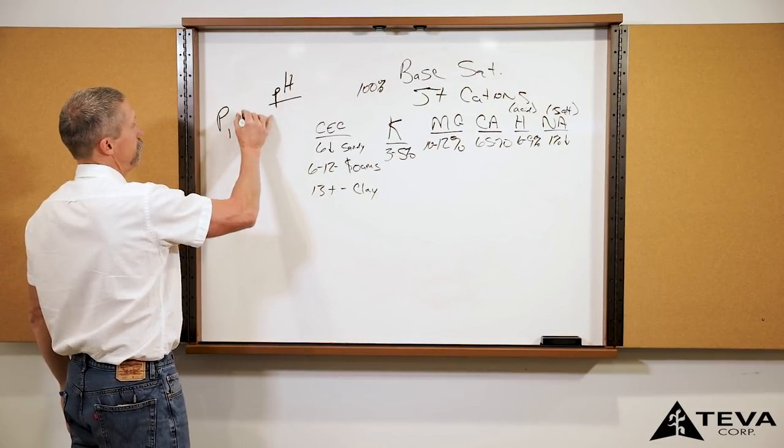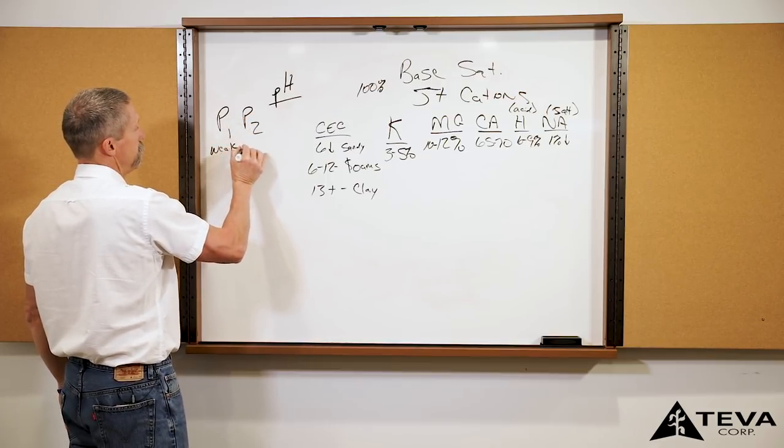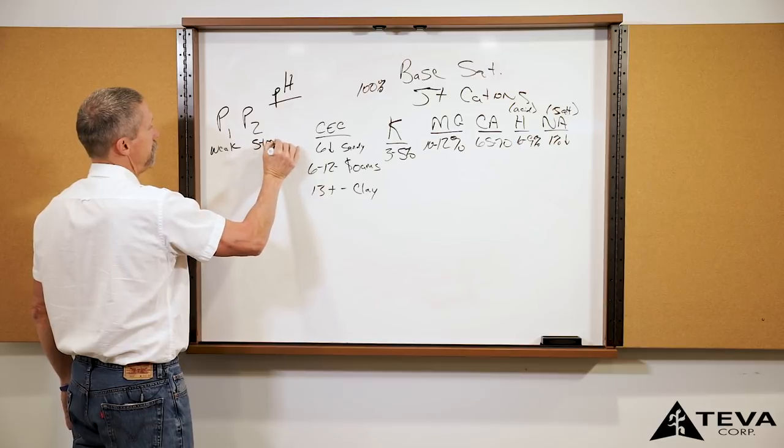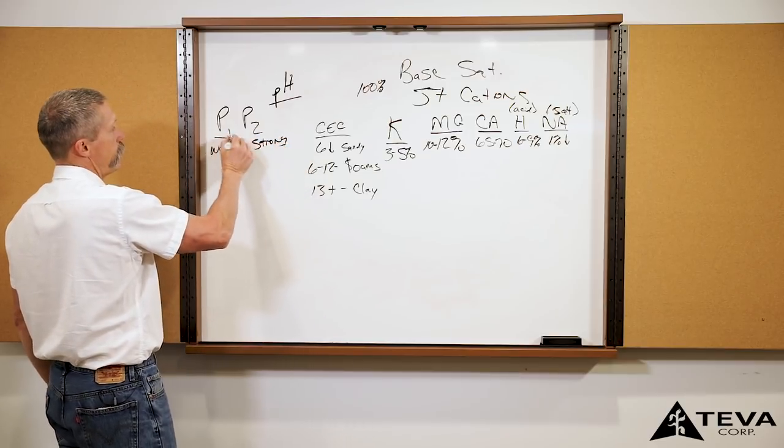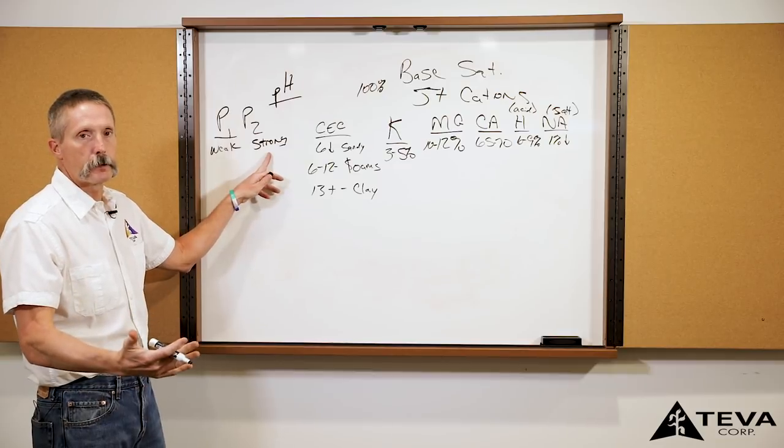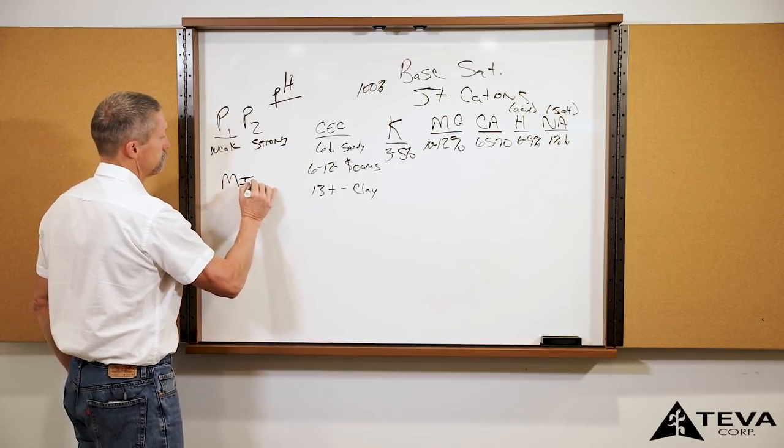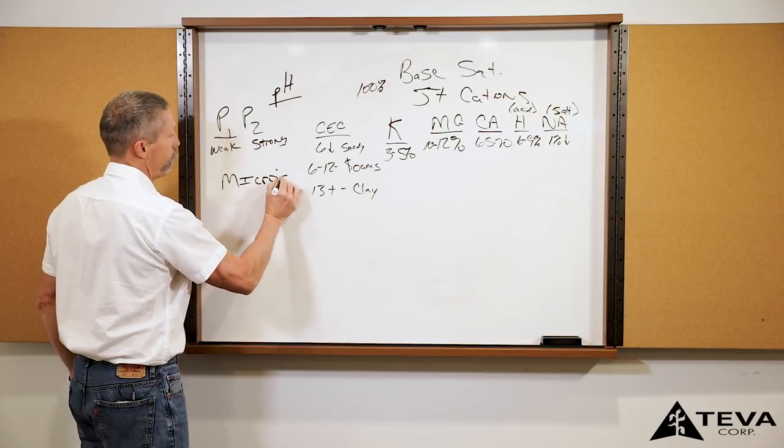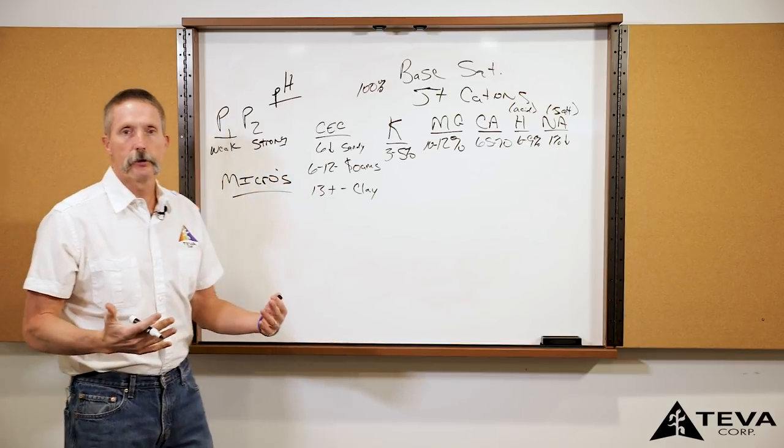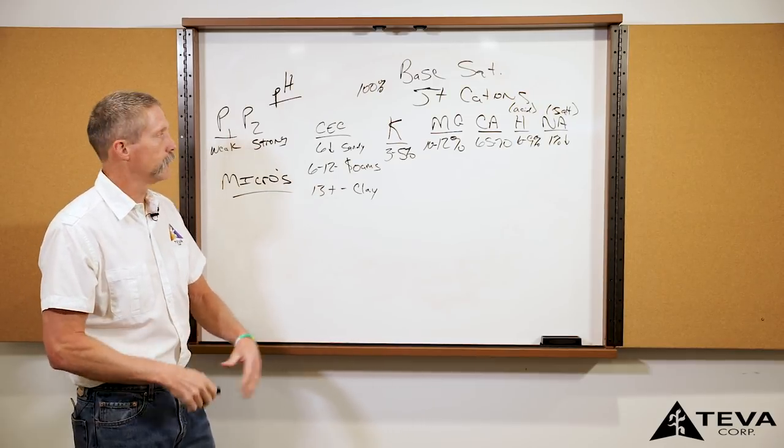Then the last couple things I look at, I look at your P1 and your P2. This is your weak bray and your strong. Basically that means that this P1 is what the plant can use right now. P2 is what's in reserve for the plant to use later. And then after that, we look at all your micronutrients. That's kind of the order that I look at when I'm looking at a soil test.